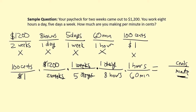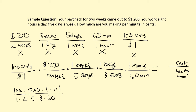I forgot to cancel my hours, so let me cancel those. Now comes the math part — I've taken care of the dimensional analysis by canceling out units. Across the top we have 100 times 1,200 times three 1s. Across the bottom we have 1 times 2 times 5 times 8 times 60. The only unit left on top is cents, and the only unit left on the bottom is minutes.